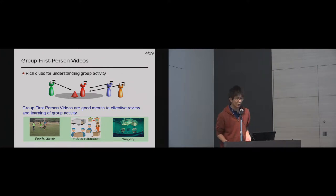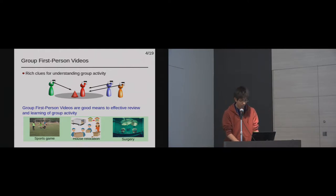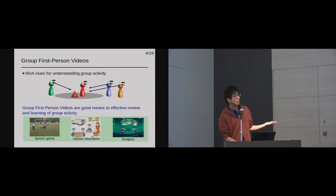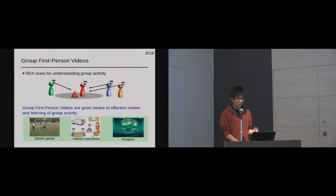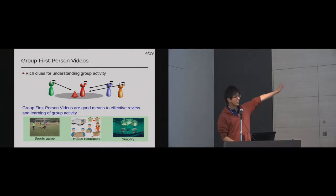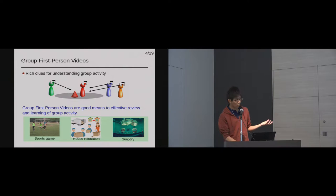Focusing on these advantages, we are now applying the first-person videos to record and review complex group activities done by multiple workers, such as sports games or surgery. Group first-person videos are very useful because they offer rich clues to understand group activity, such as important persons or objects that commonly appear in multiple videos. Our final goal is to explore group first-person videos as a good means to review and run group activity.